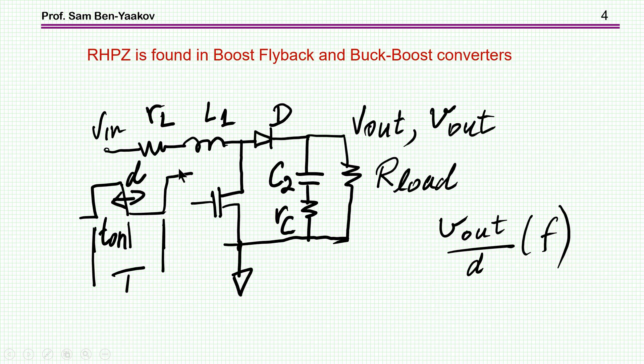Now such a zero is found in a boost converter, flyback, and also in a buck-boost converter. Here I'm showing a boost converter. This is the parasitic resistance of the inductor, diode, switcher, and then we have the output section. I'm showing here the ESR of the capacitor and here the load. And we are interested here in the small signal between the modulation here of the duty cycle. This will be modulated here. This is small d and the small changes at the output, the AC component at the output.